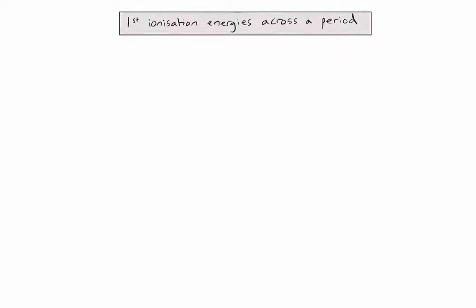In order to understand the trend in first ionization energies across periods 2 and 3, it's quite useful to make a prediction using the Bohr model of the atom. Let's draw a graph with the first ionization energy on the y-axis and the elements in period 2 along the x-axis.